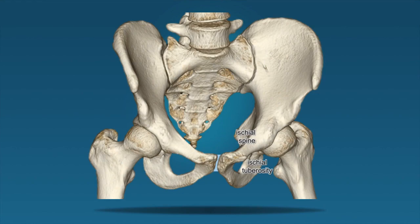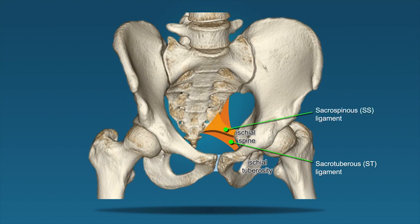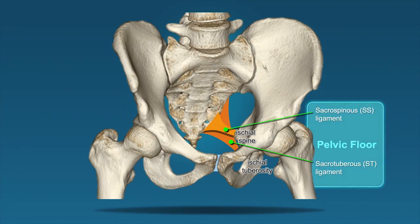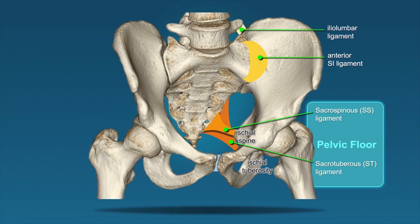Looking at those ligaments: we have the sacrotuberous ligament going from the sacrum to the ischial tuberosity, and the sacrospinous ligament from the sacrum to the ischial spine. Together those represent our pelvic floor ligaments. We can also illustrate the anterior sacroiliac joint ligament, with a similar one on the posterior side. Also of note, we have the iliolumbar ligament connecting the L5 transverse process to the iliac bone. So injuries that occur posteriorly will often have a vertical fracture that displaces the transverse process of L5.